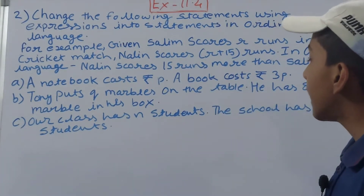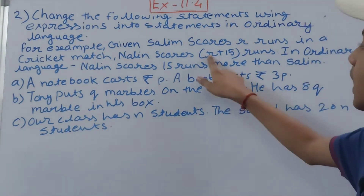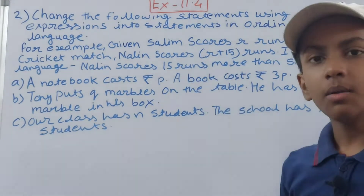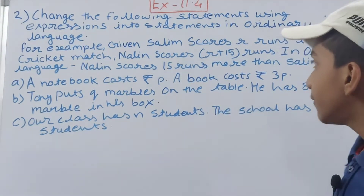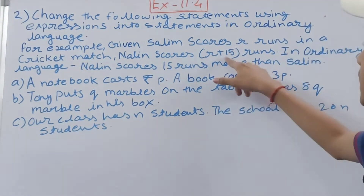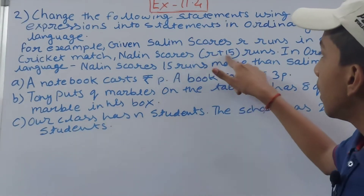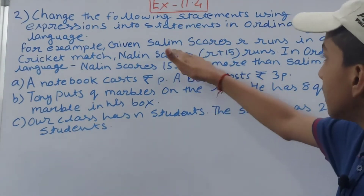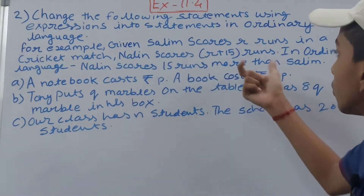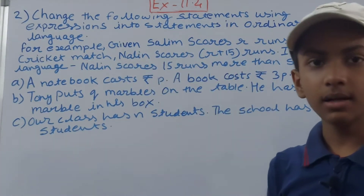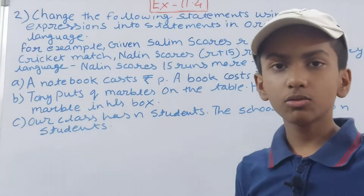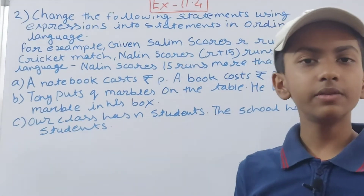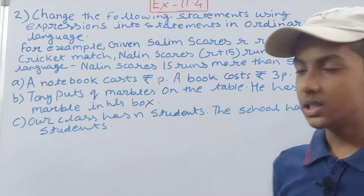In ordinary language, Naline scores 15 runs more than Salim. So r is the number of runs scored by Salim, and 15 means that Naline scored 15 more runs than r runs scored by Salim — he scored 15 runs more than that scored by Salim. This is the method we use for converting these statements to ordinary language.